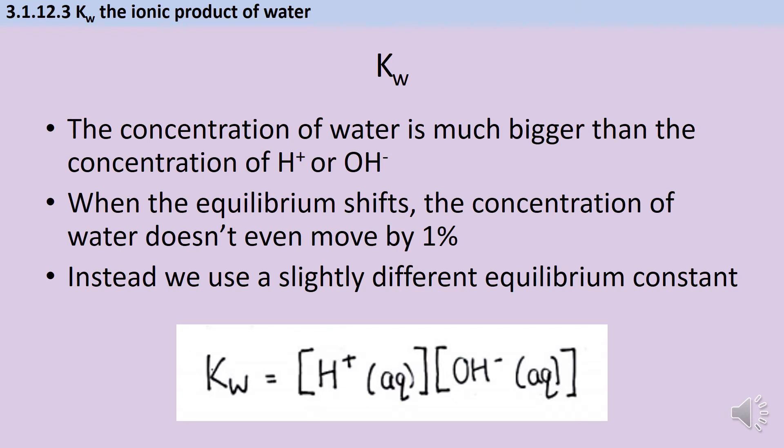Even though water can dissociate to form hydrogen ions and hydroxide ions, and this is happening all the time, it's happening in quite a small percentage of cases. The vast majority of the water remains intact, and that means the concentration of water is much larger than the concentration of hydrogen ions or hydroxide ions.